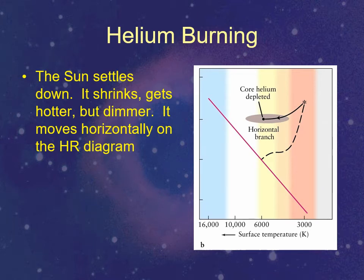The Sun starts helium burning. As it starts the helium burning process, it settles down and becomes a horizontal branch star. It's not really stable at this point — it's still evolving, still moving across the HR diagram back towards the main sequence.